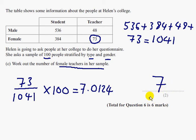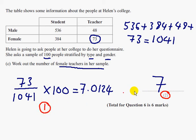If she's going to ask 100 people, she needs to ask 7 female teachers in her sample. This is a 2-mark question for part C: one mark is for the method, and the second mark is for the final answer of 7, since you can't get 7.01 of a person.